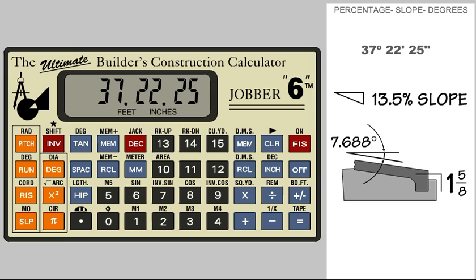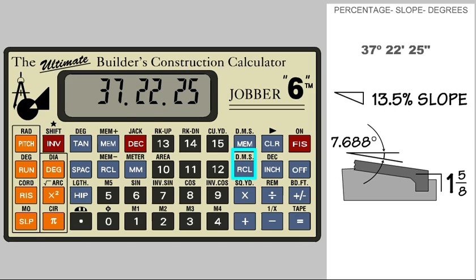With the degree in the calculator, we need to convert to a decimal degree by pressing the decimal key. It can now be used for solving any math problem. To convert back to a DMS degree, press the invert key and the DMS recall key. That's how easy it is with the Jobber.